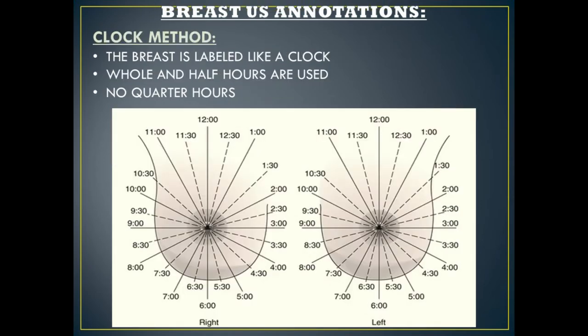Our next method of annotation is the clock method. The breast is split into equal segments for both full and half hours. Note that no quarter hours are used. 12 o'clock is at the top of the breast, and 6 o'clock is at the bottom of the breast.